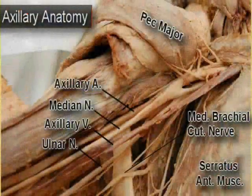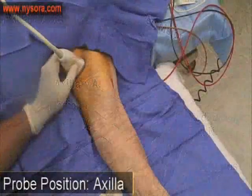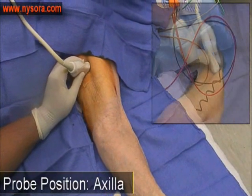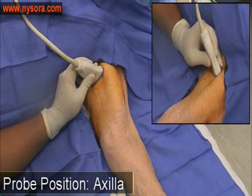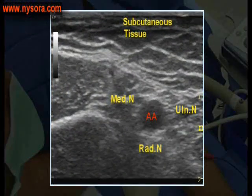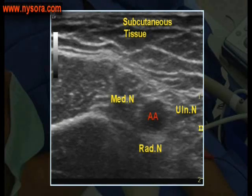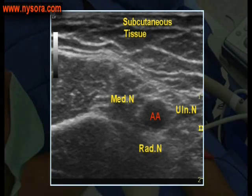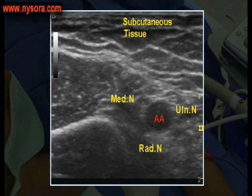This displays relevant anatomy of the axilla. The ultrasound transducer is placed transverse to the distal axilla and proximal arm. The axillary artery can be visualized in the middle of the screen with the nerves surrounding it.